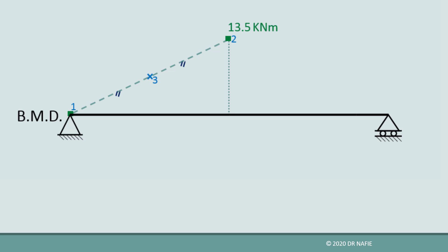Next, we bisect the line at point 3. From point 3, we go up 4.5 kilonewton meters in a direction perpendicular to the beam to locate point 4. This value of 4.5 kilonewton meters is calculated from the formula WL²/8, where W is the value of the load and L is the distance between points A and C — the distance over which the parabola is drawn. From point 4, we go up an identical distance of 4.5 kilonewton meters to locate point 5.